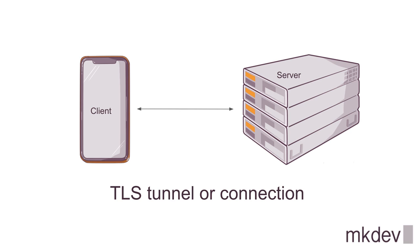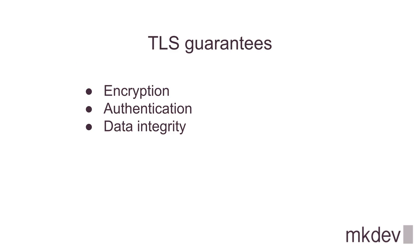Now let's move to TLS itself. It provides us with an encrypted tunnel upon a TCP connection. In the case of an HTTPS connection, it's a tunnel between your browser process and the process on a server that you are accessing. TLS also guarantees such important properties as encryption, authentication for the server or both client and server — in which case it's known as mutual or two-way TLS — and data integrity.